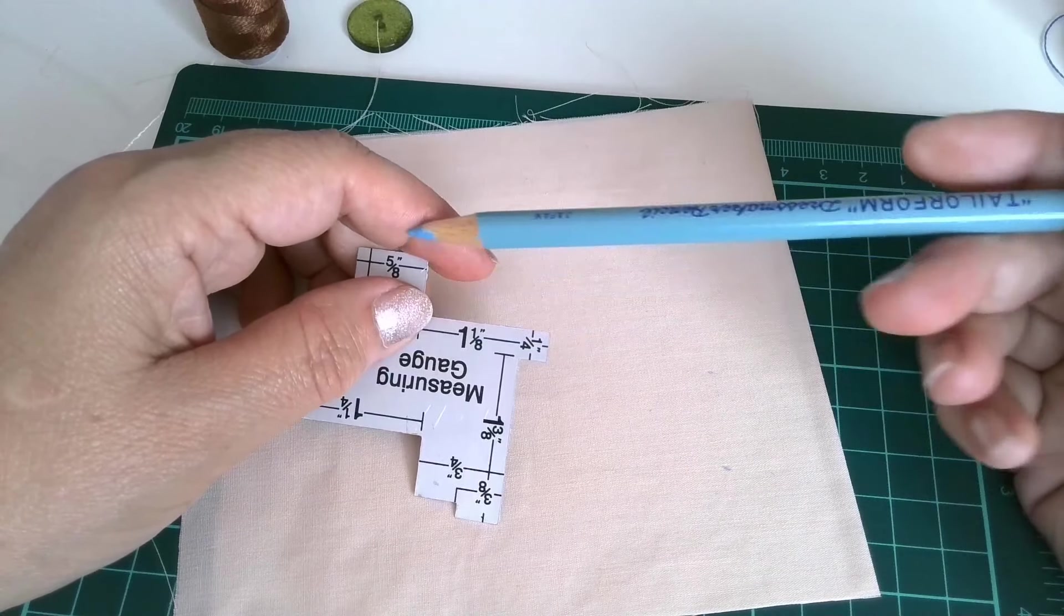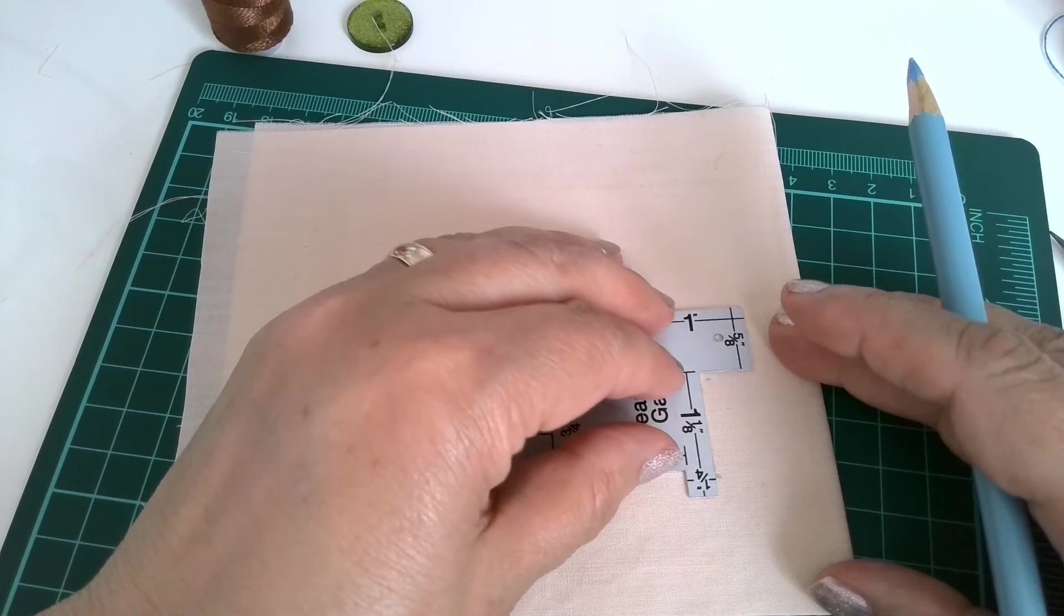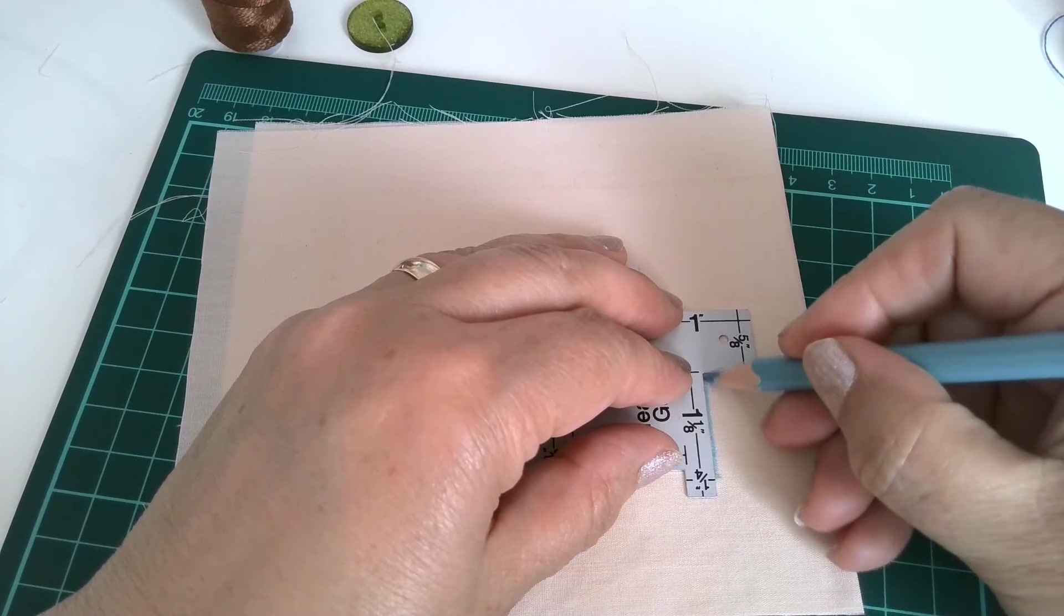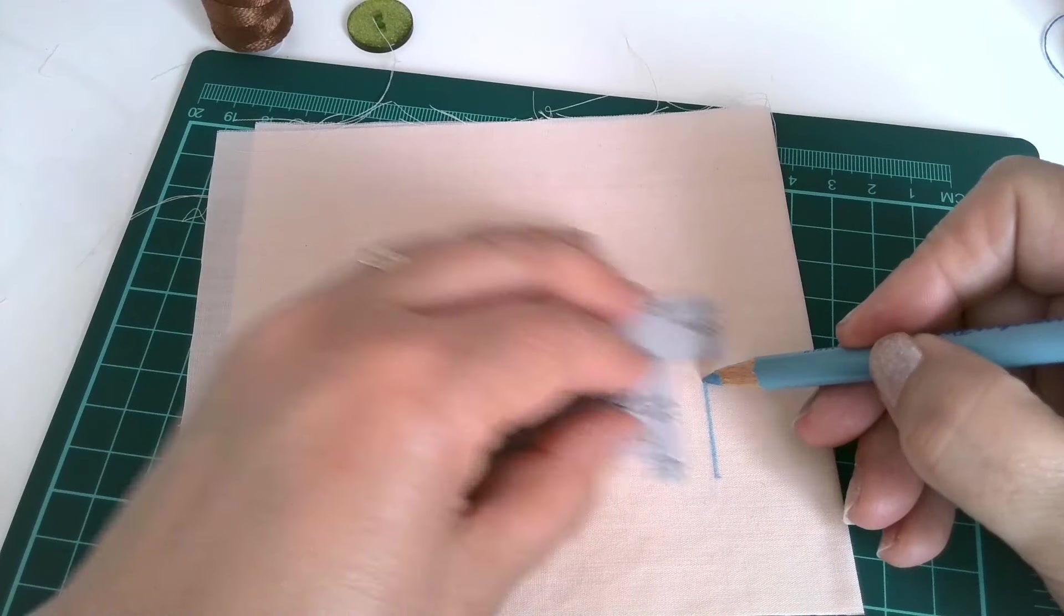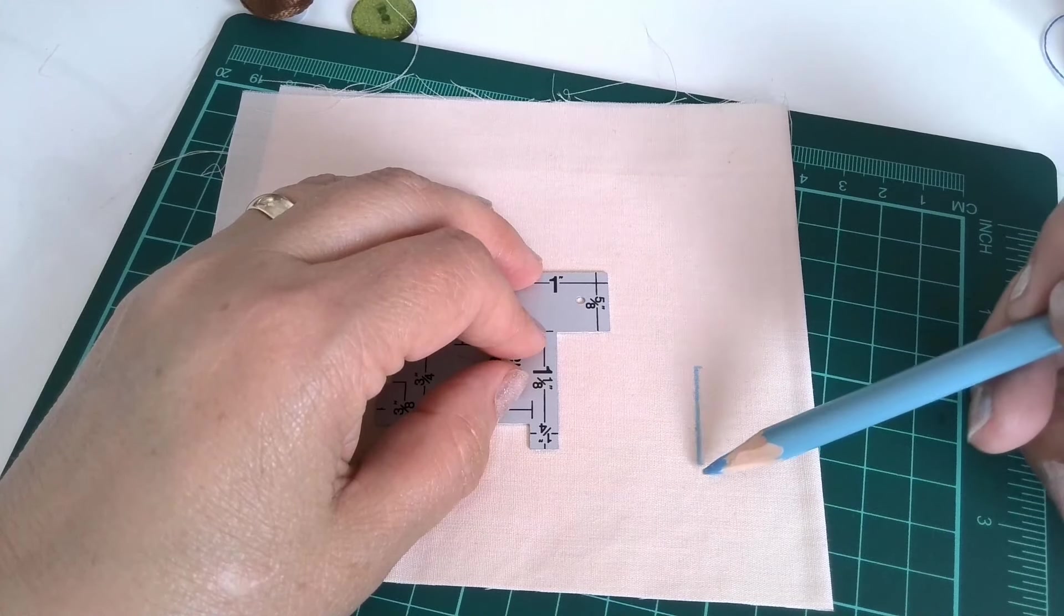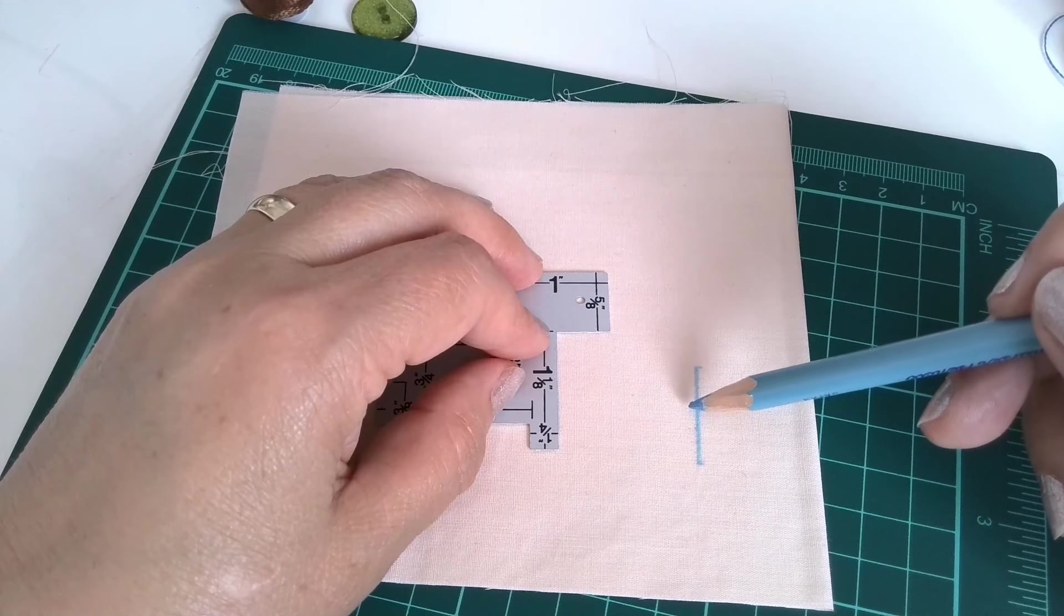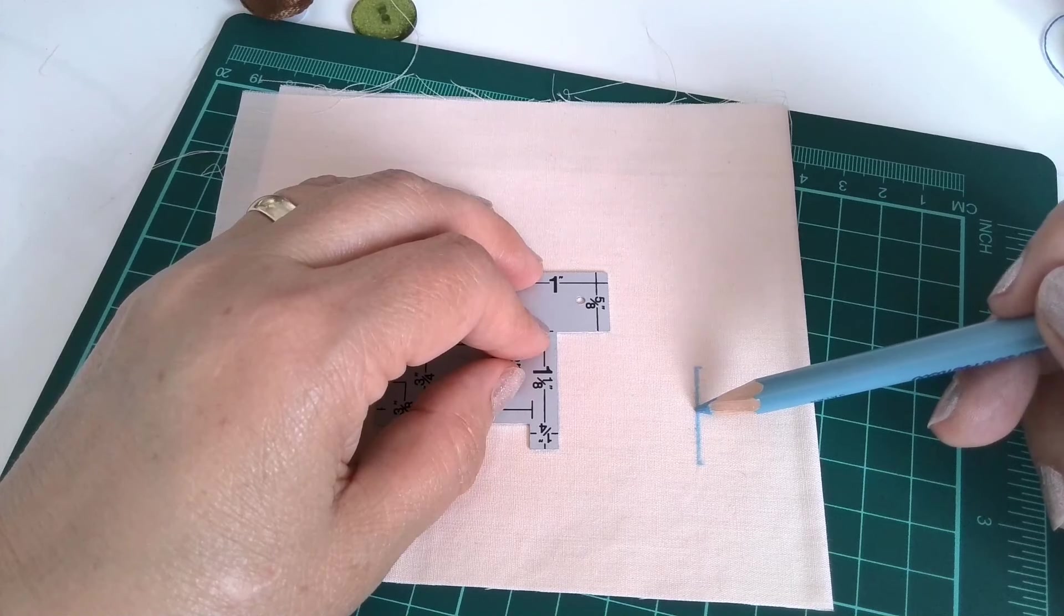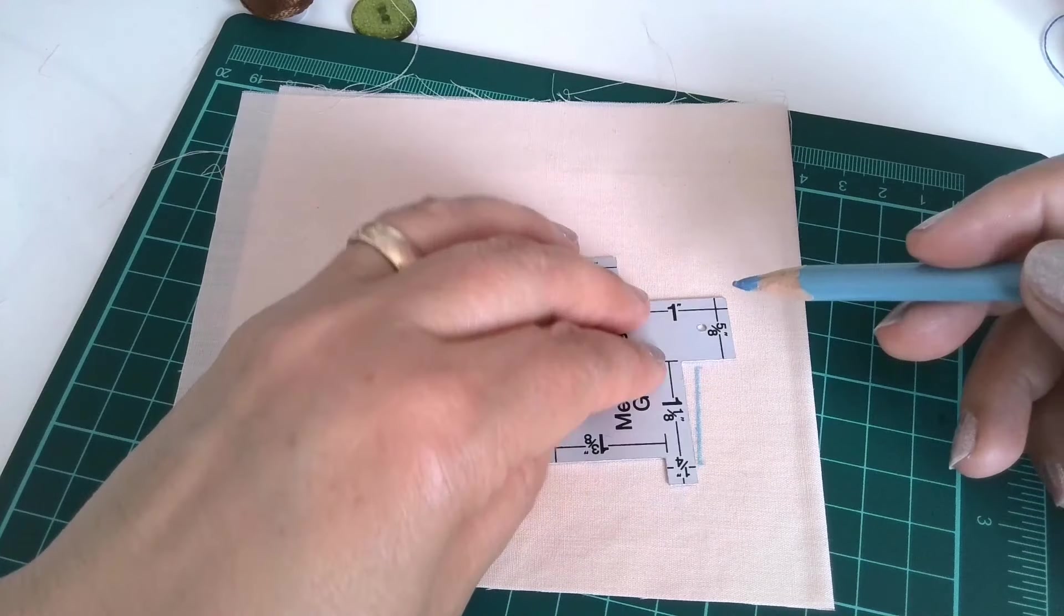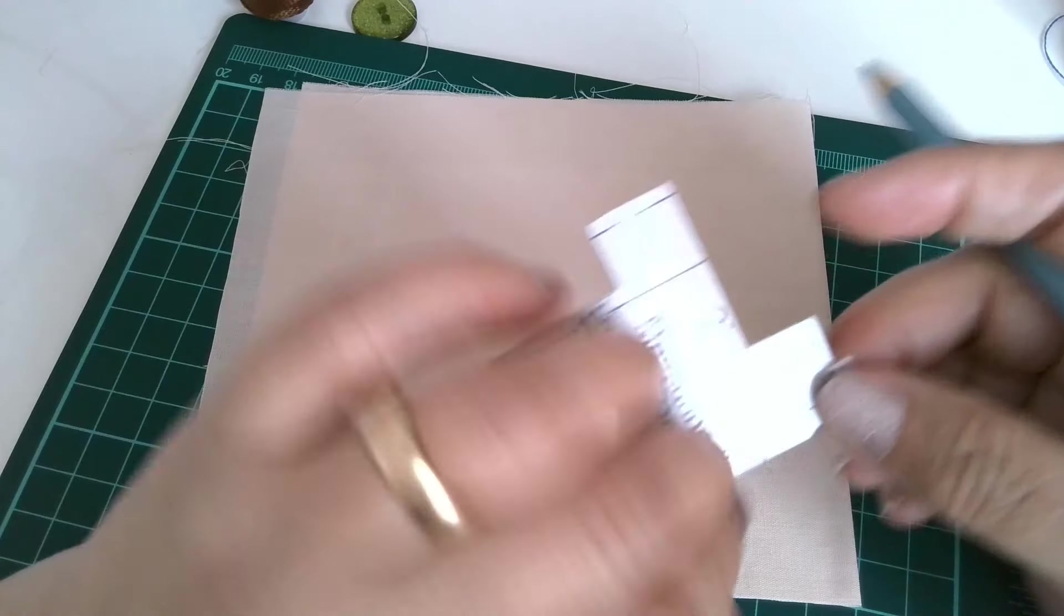I'm using just a regular fabric marker to mark the distance from the cut on each side. Where is one eighth of an inch here. Here it is.